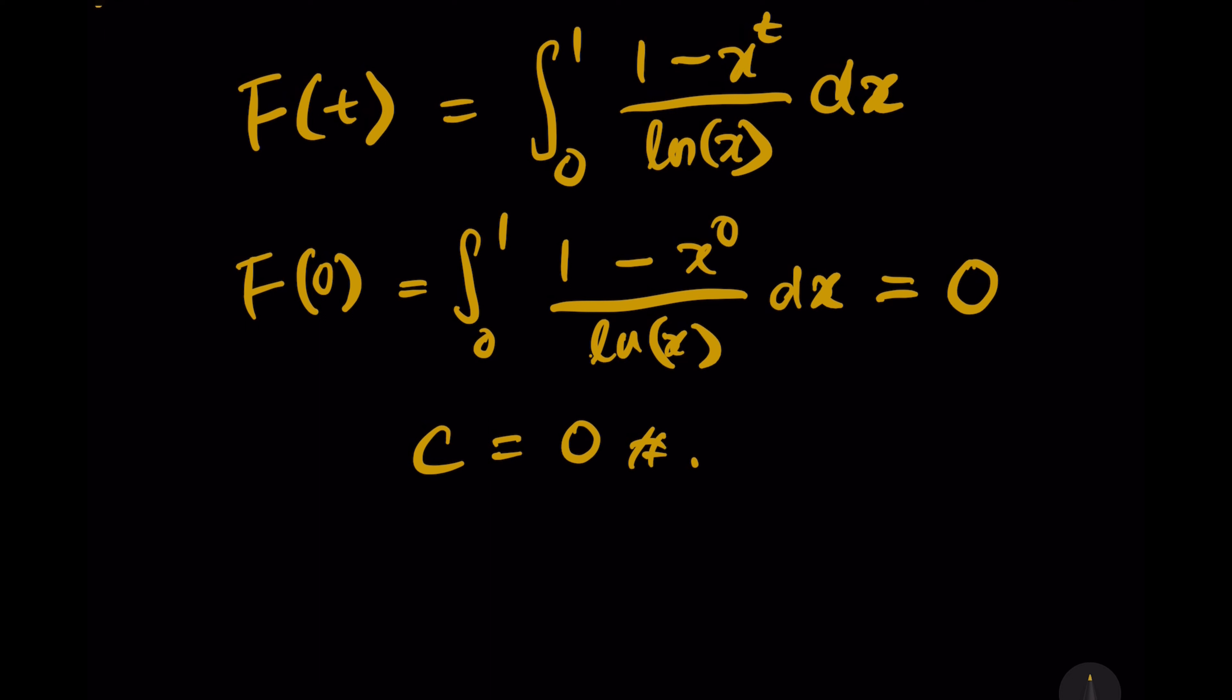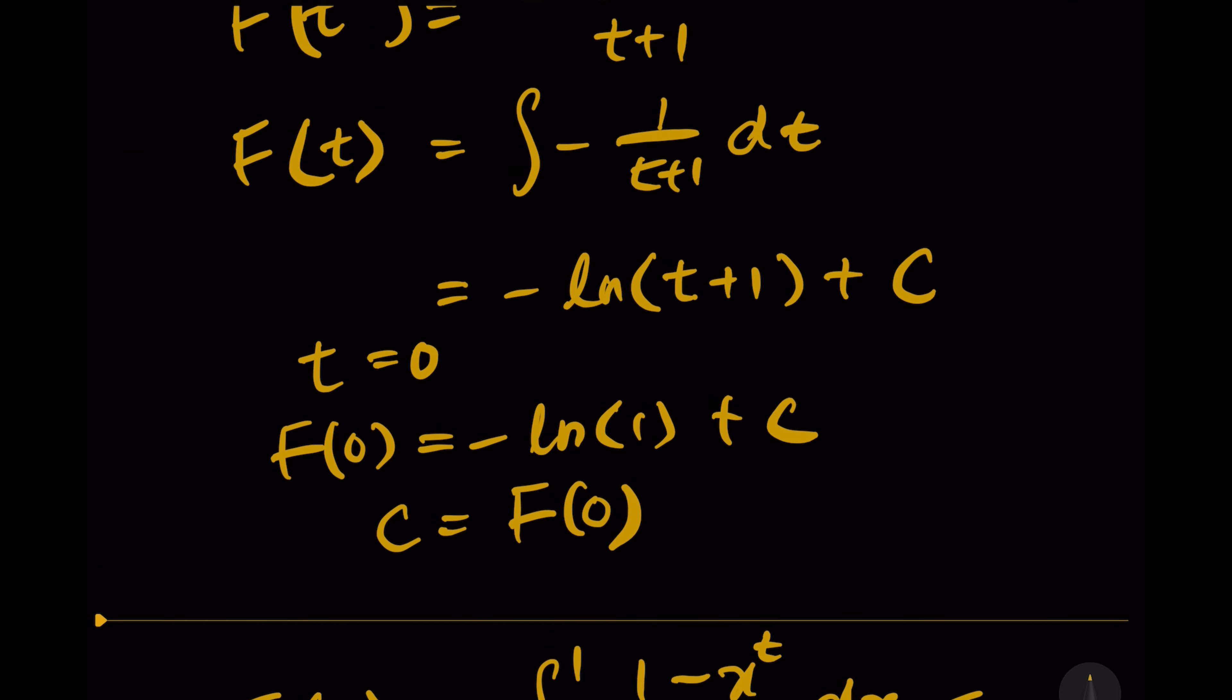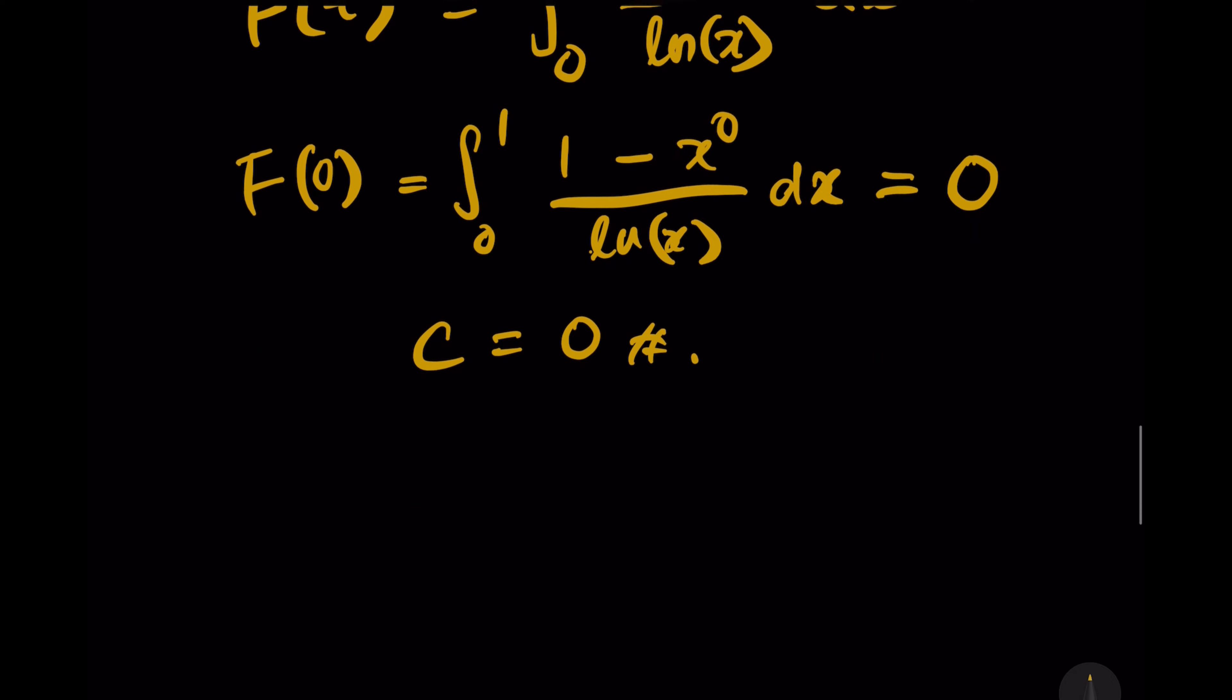Now if you notice that this is the original F(t) that we defined, and then there is another F(t) we derived along the way where F(t) equals negative ln(t+1) plus c.